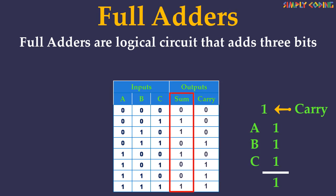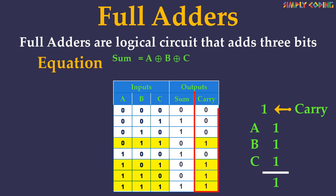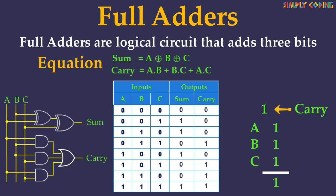If you look at the output of sum and carry, you will see sum is 1 only when A, B and C have an odd number of 1 inputs. So it is nothing but A XOR B XOR C, and carry is 1 when either 2 or more of the inputs are 1, which is represented by the equation AB + BC + AC. You can also draw the logic circuit diagram for full adder, which has an XOR gate for sum and 3 AND gates which are connected by 1 OR gate for carry.